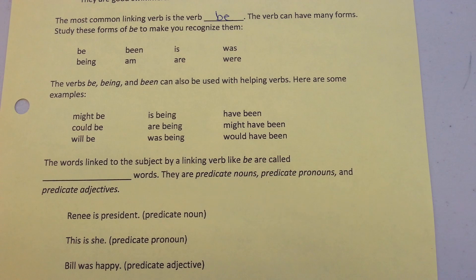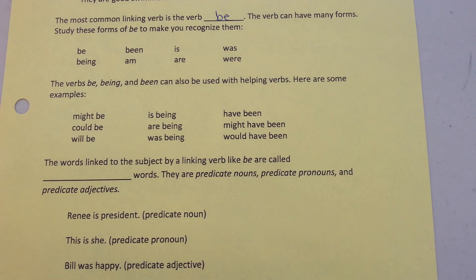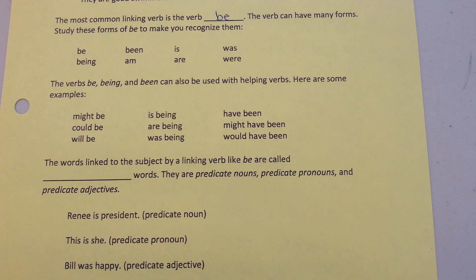The verbs "be," "being," and "been" can also be used with helping verbs. Here are some examples: might be, could be, will be, is being, are being, was being, have been, might have been, would have been.